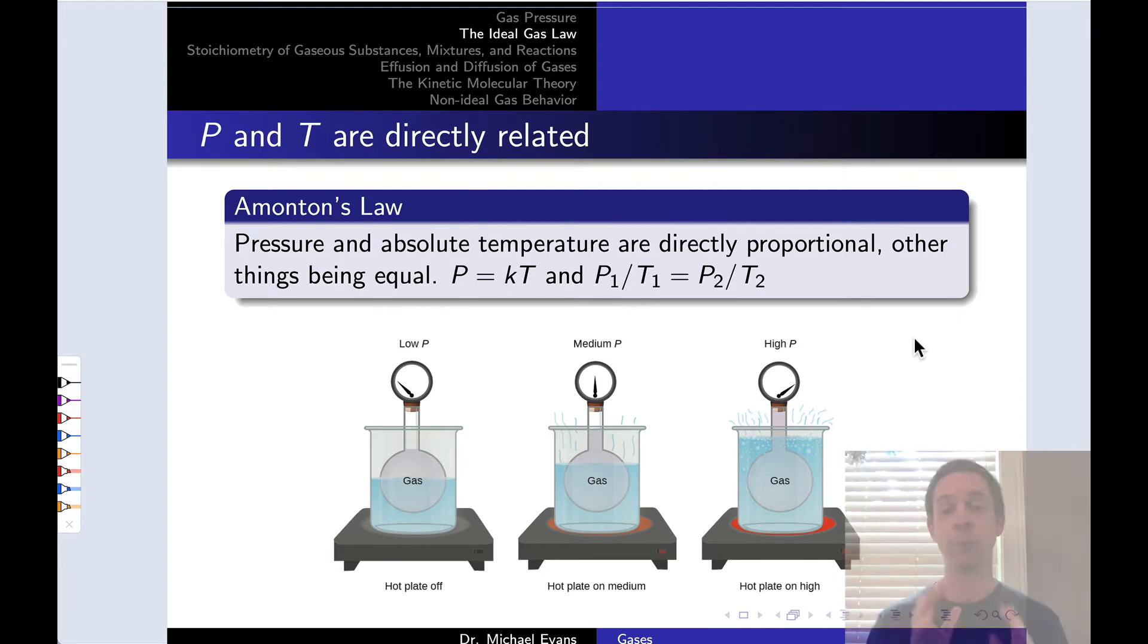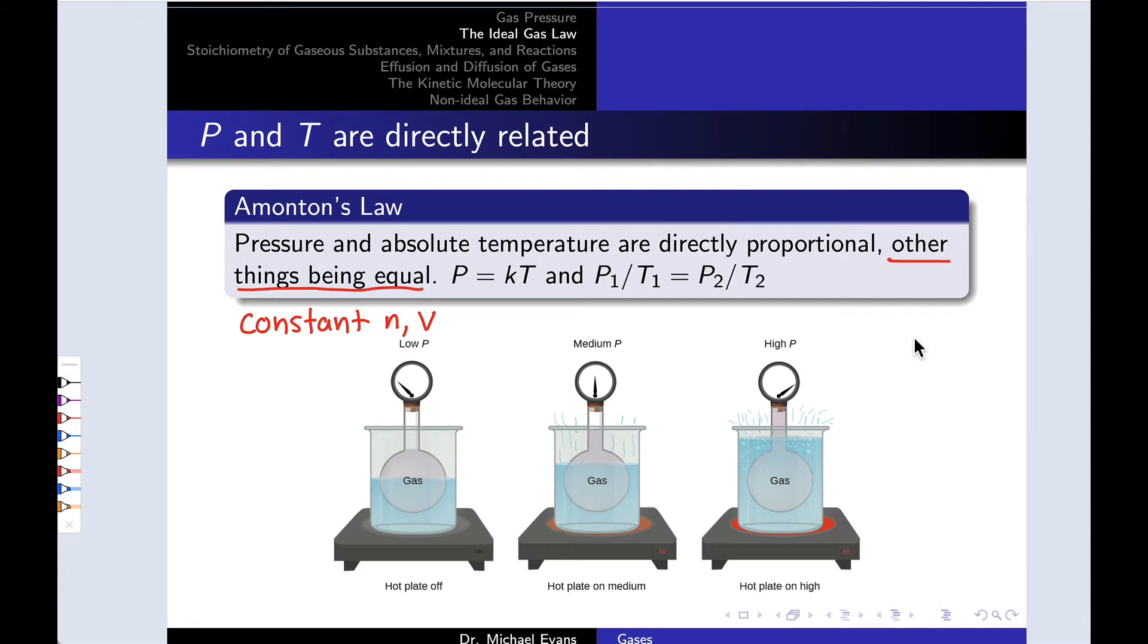Imagine we started with a gas in a rigid vessel that is closed such that gas particles cannot get in or out. This means we're in a constant number of moles and constant volume situation, so we can look at the effect of pressure on temperature or vice versa.